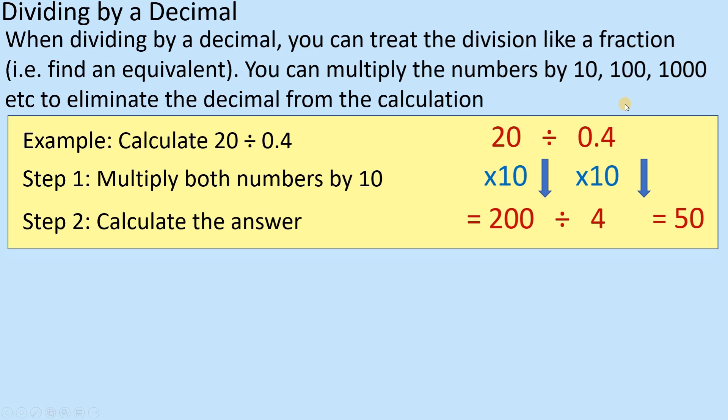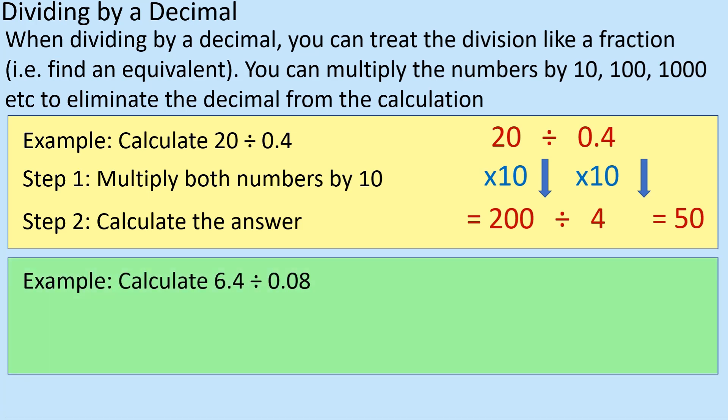Because this is a little bit like you do a fraction, 20 divided by 0.4 is the same as 200 divided by 4, it is the same, so there's nothing else I actually need to do.